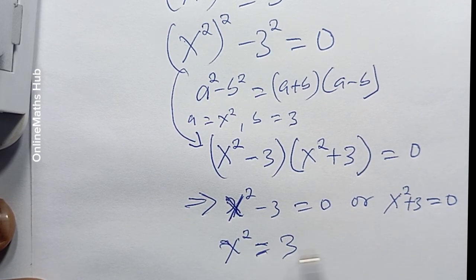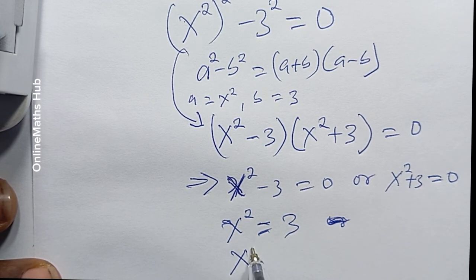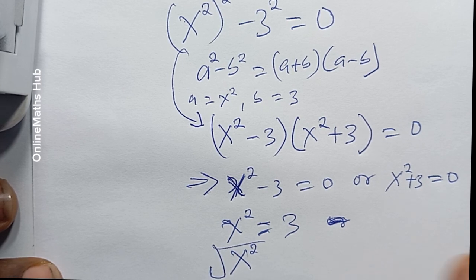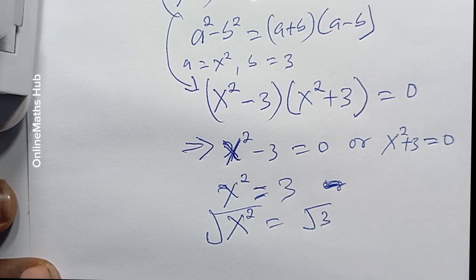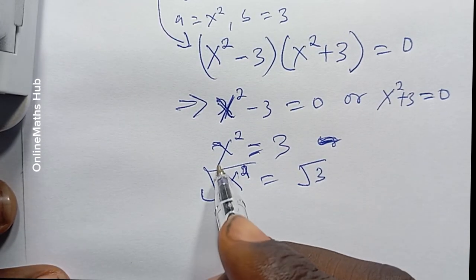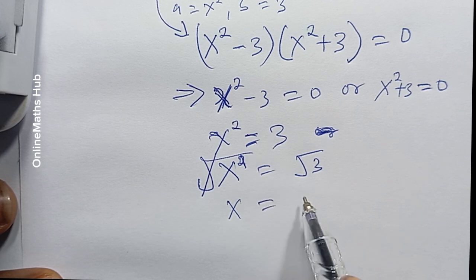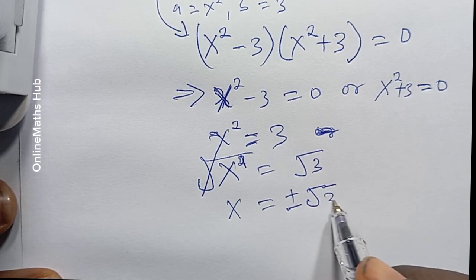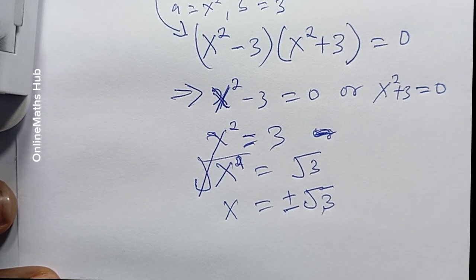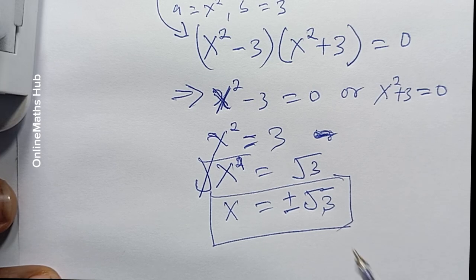From x² − 3 = 0, x² equals 3. I'll take the square root of both sides: the square root of x² equals the square root of 3. These cancel, giving x equals plus or minus the square root of 3. So I have gotten two real values of x: positive √3 and negative √3.